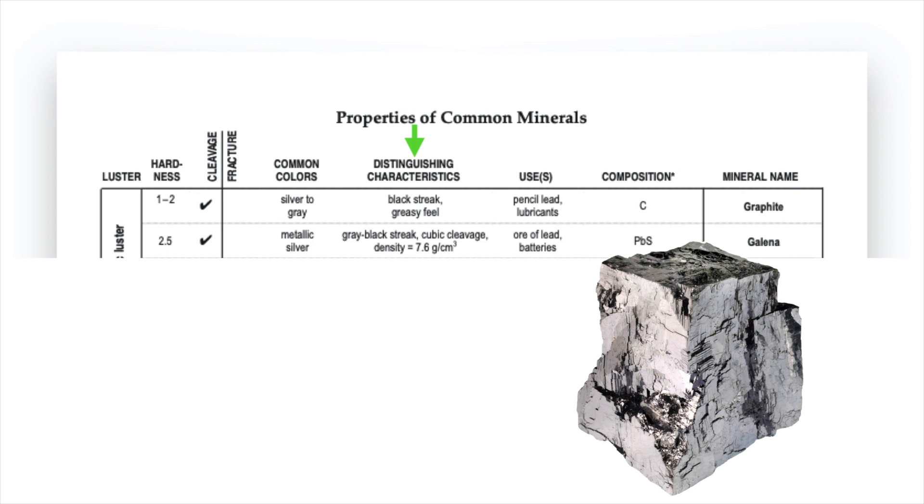Let's jump over to distinguishing characteristics. So this may prove to be helpful. So graphite has a black streak, galena has a gray black streak. Slightly different but again probably pretty tricky to actually tell in reality. Graphite has a greasy feel so I could actually feel this sample to figure out if it has a greasy feel or not. Galena has a density of 7.6 which is pretty high so I would expect it to feel very heavy if it were galena. So those are things I can definitely consider.